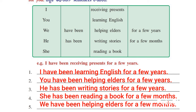Let's see the answers. First one: I have been learning English for few years. Next one: You have been helping elders for a few years. Next one: He has been writing stories for a few years. Fourth one: She has been reading a book for a few months. Fifth one: We have been helping elders for a few months. This is the answer for roman number four.